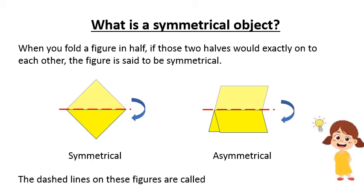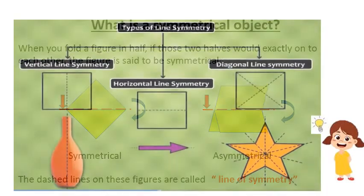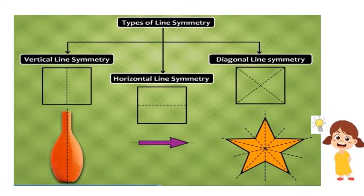The dash line on these figures is called a line of symmetry. We also call them as mirror line. Line of symmetry can be in different angles according to the symmetry of the figure. There can be one or more than one symmetrical lines for a figure.